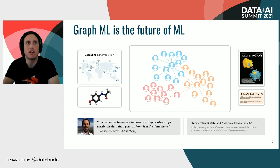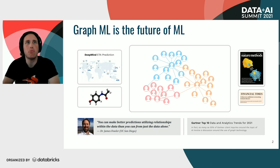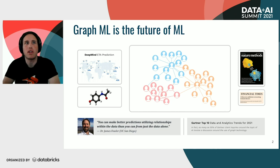Just an example here on the left: DeepMind actually improved the Google Maps ETA prediction by over 30% by leveraging graph-powered machine learning. Other breakthroughs, for example in computational chemistry or drug discovery, are also currently often driven by graph-powered machine learning.